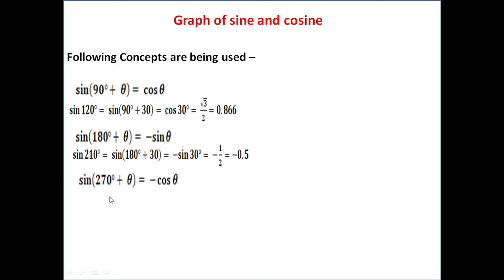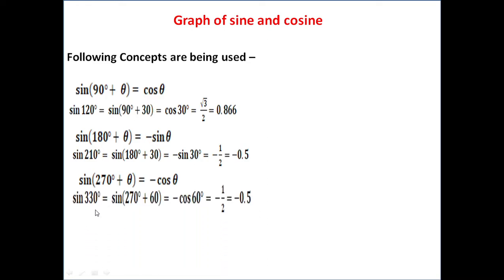The third concept we are going to use: sine(270 + θ), that is any angle in the fourth quadrant, becomes minus cos θ. For example, 330 degrees equals 270 plus 60, so that is minus cos 60, and its value becomes minus 1 by 2.